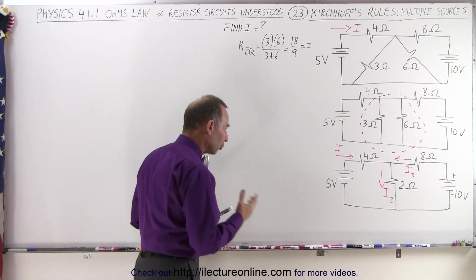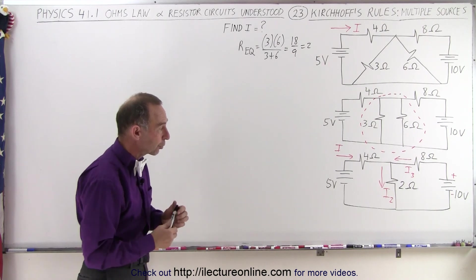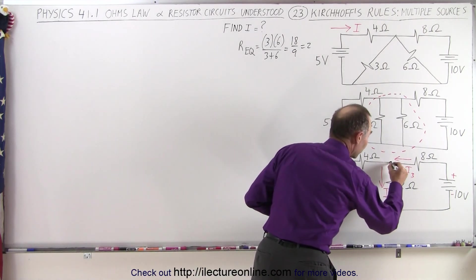My assumption is that I3 is probably from right to left in the top branch here. So let's draw it like this. Call that I3. And then when we use Kirchhoff's first rule, where the sum of all the currents entering a branch point equal all the currents leaving the branch point, and if we call this branch point right there,